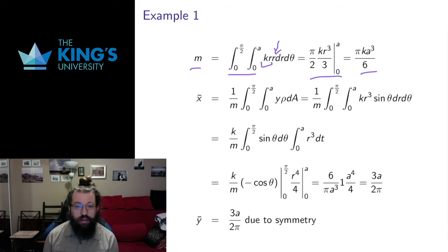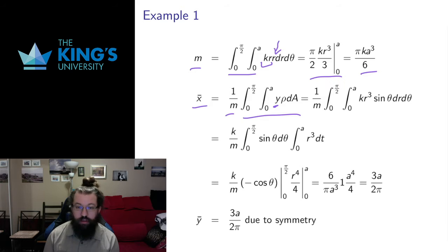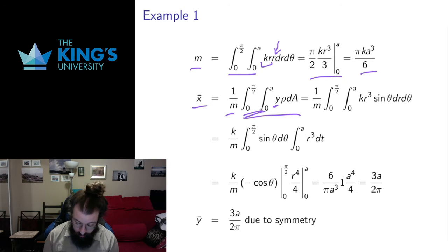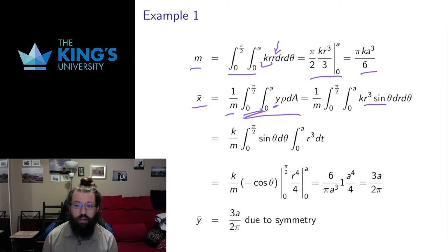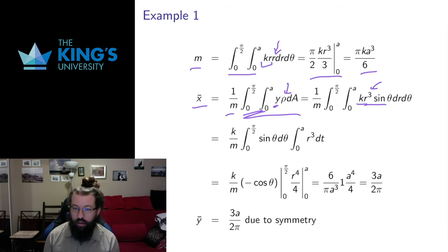Now I want to calculate the coordinates of the center of mass. x-bar is 1 divided by m times the first moment in x, and likewise for y-bar. The first moment in x is the integral of y times rho dA. Remember, the moment about the x-axis is the distance out from the x-axis, which is the y coordinate. The y coordinate in polar coordinates is r sine theta, and Kr is the density. So I have r cubed: one from the y coordinate, one for the density, and one from the Jacobian.